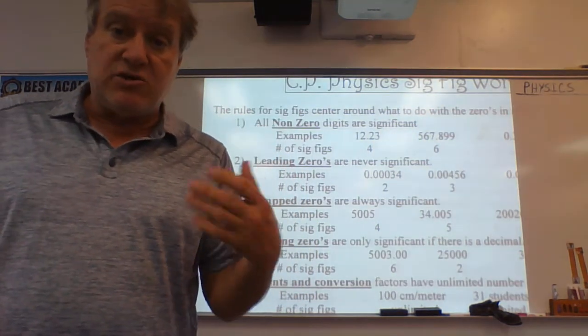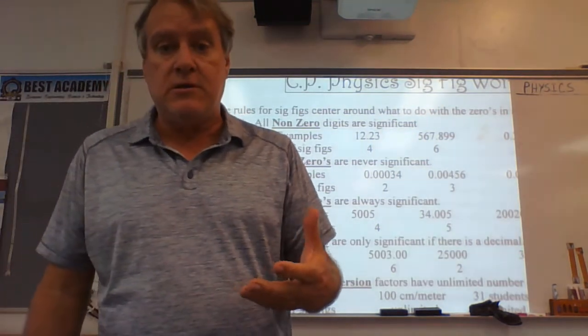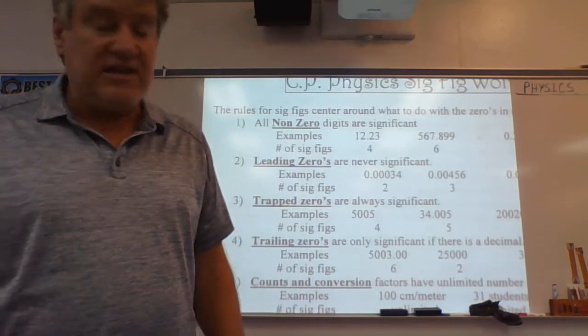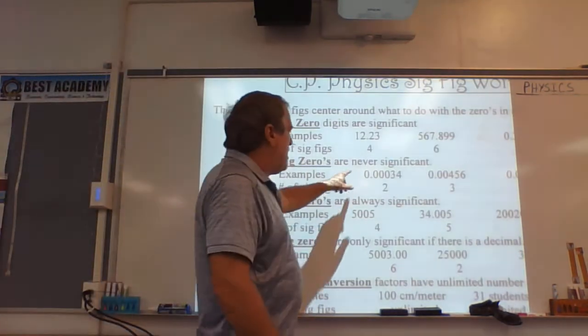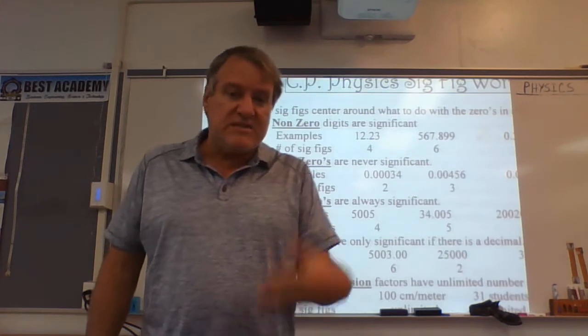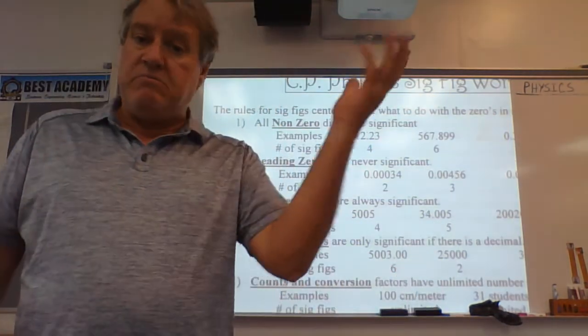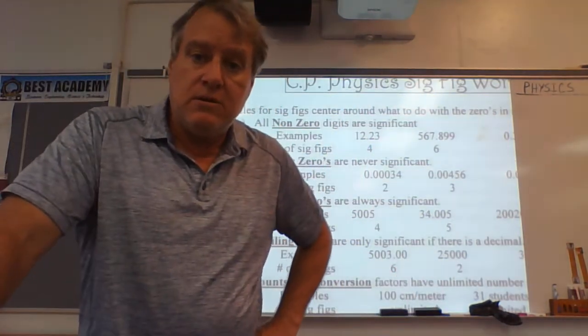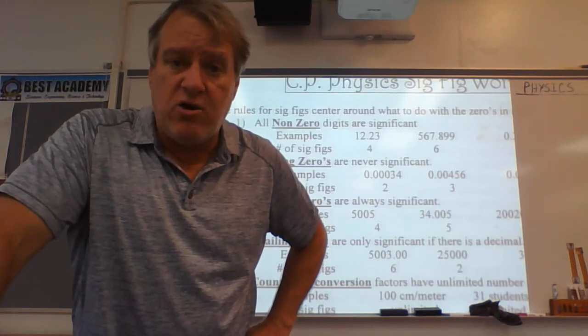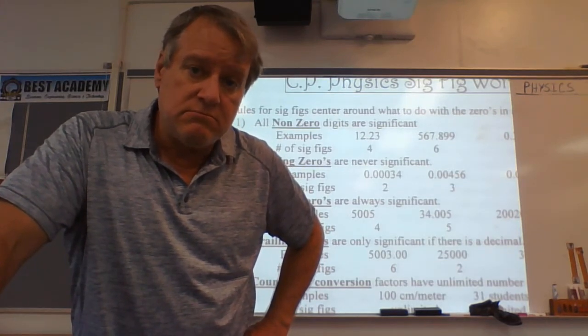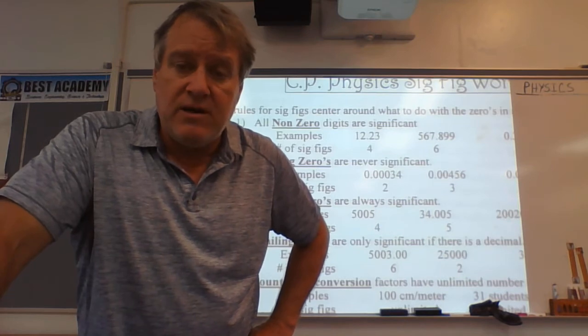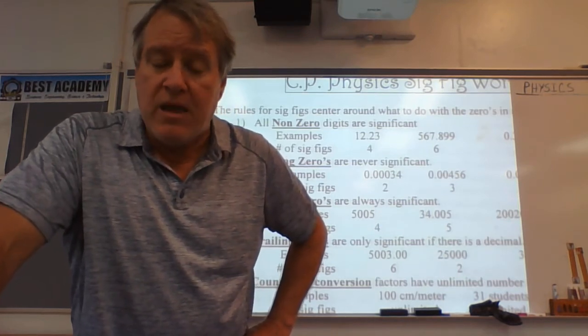So we call those leading zeros, trap zeros, and trailing zeros. And let's look at the rules. Leading zeros are never significant. If you put a zero in front of a number, it means nothing. If I asked your age, you're not going to go, Mr. L. I'm 0, 0, 0, 0, 0, 17. Because those zeros are a waste of time.